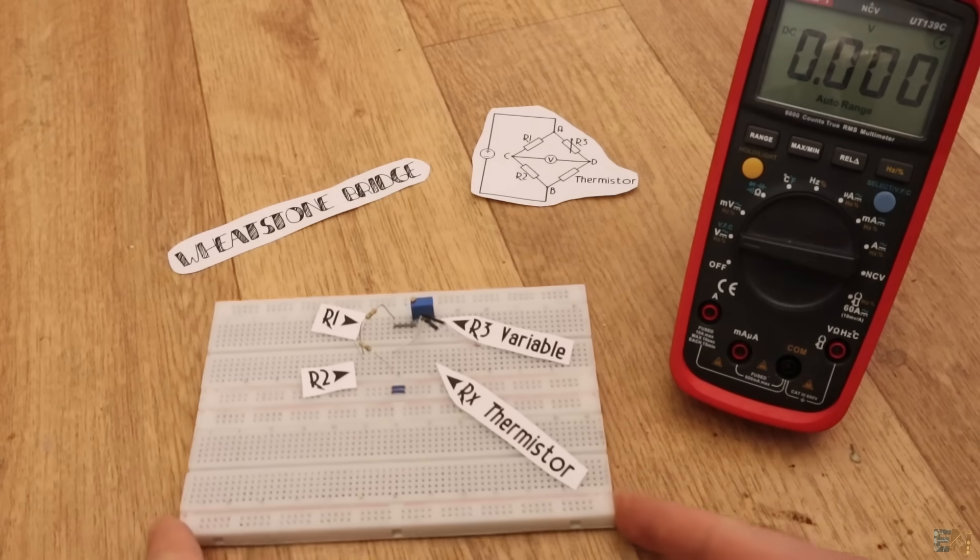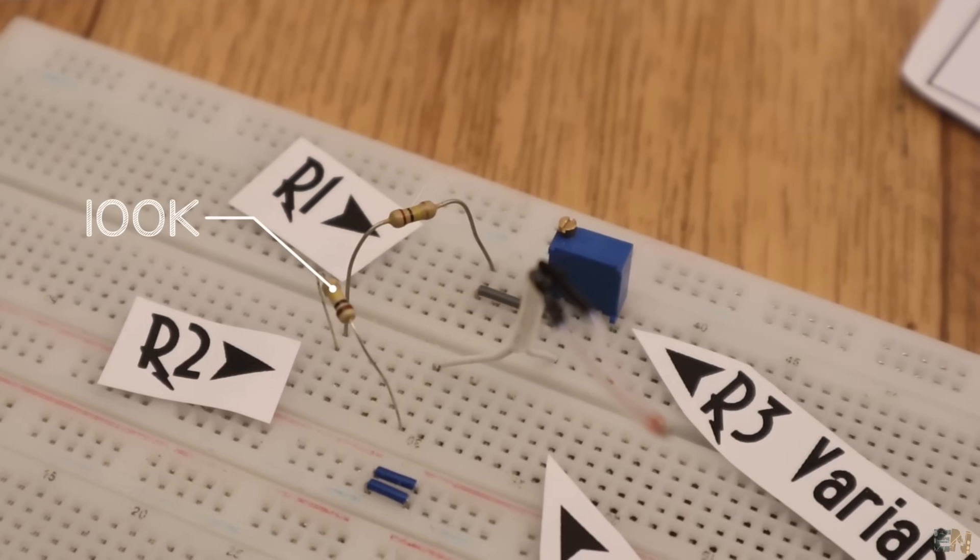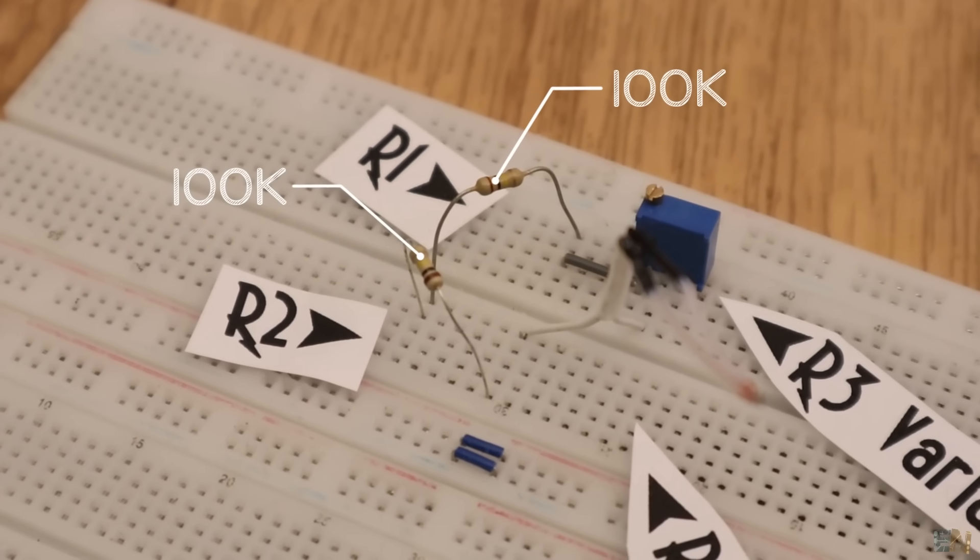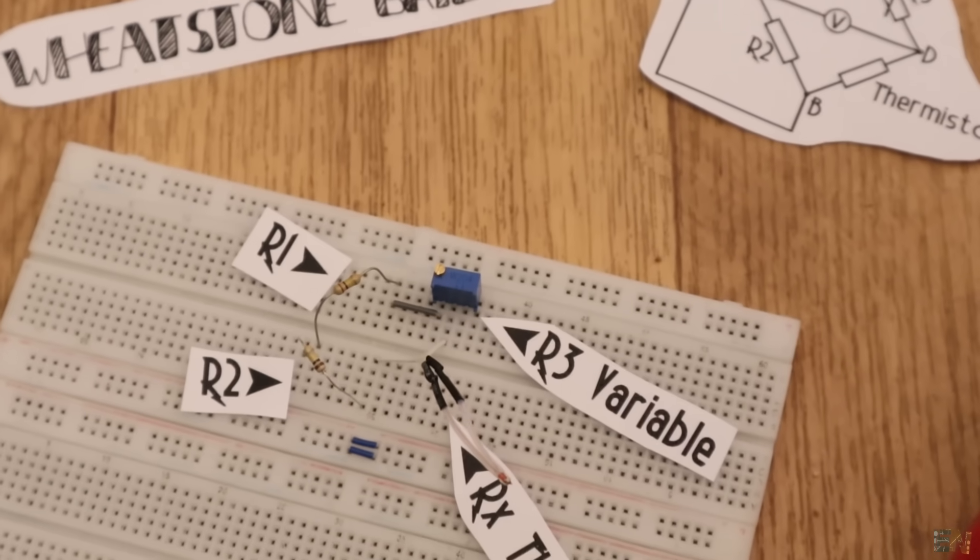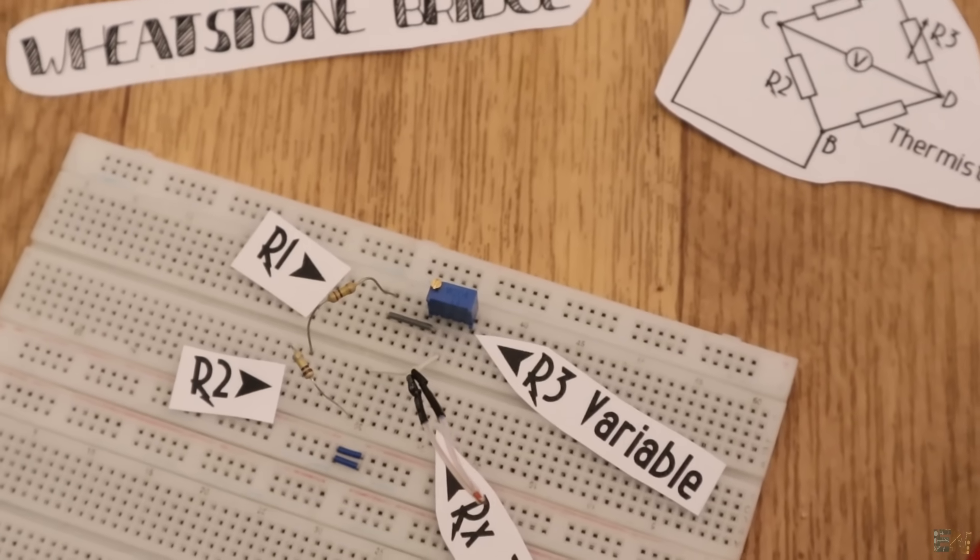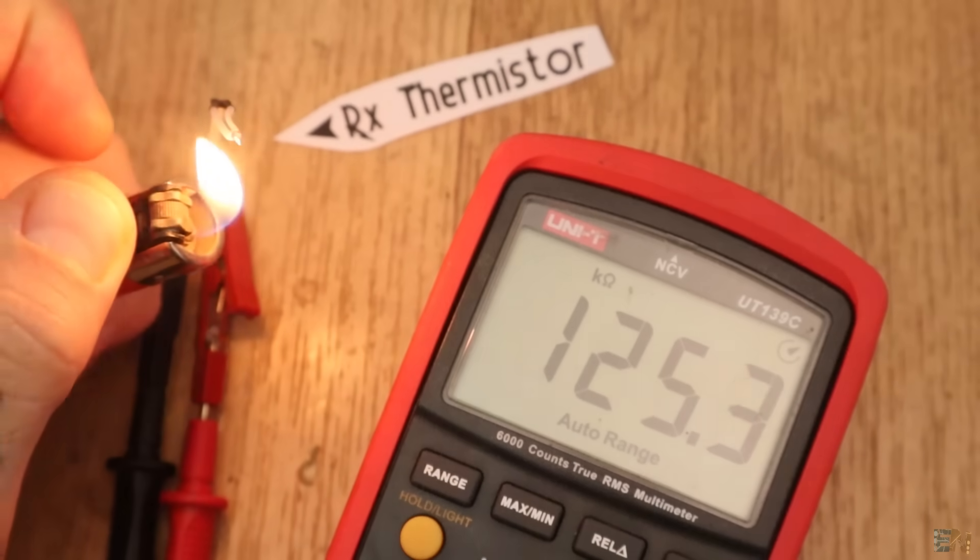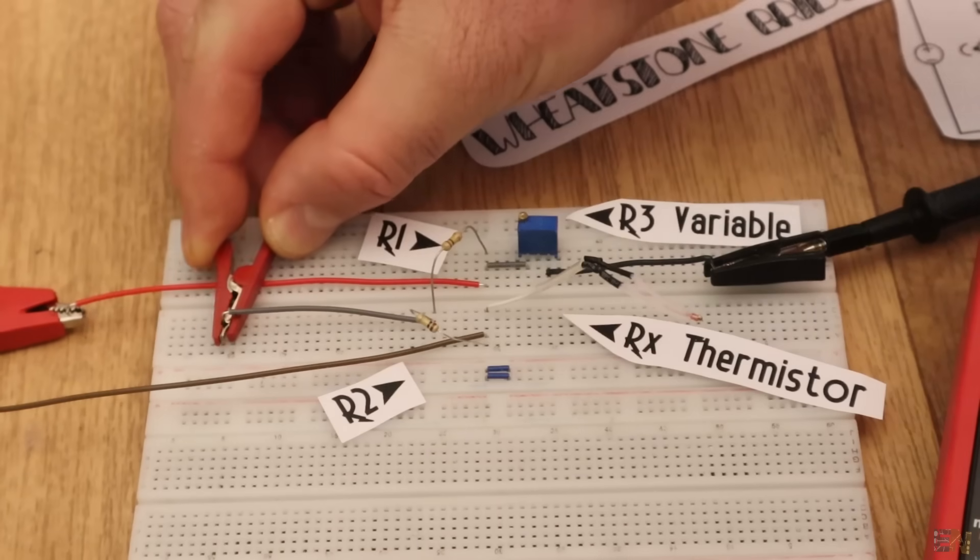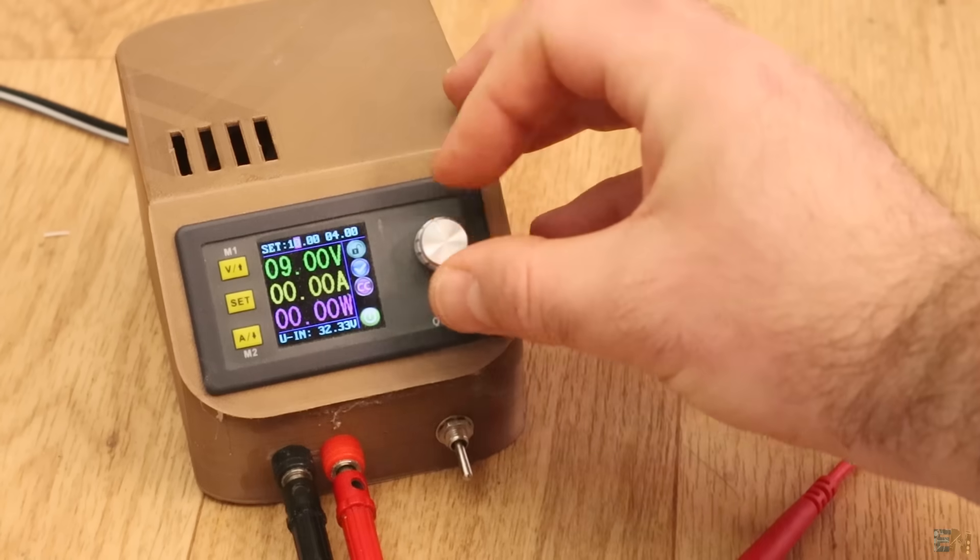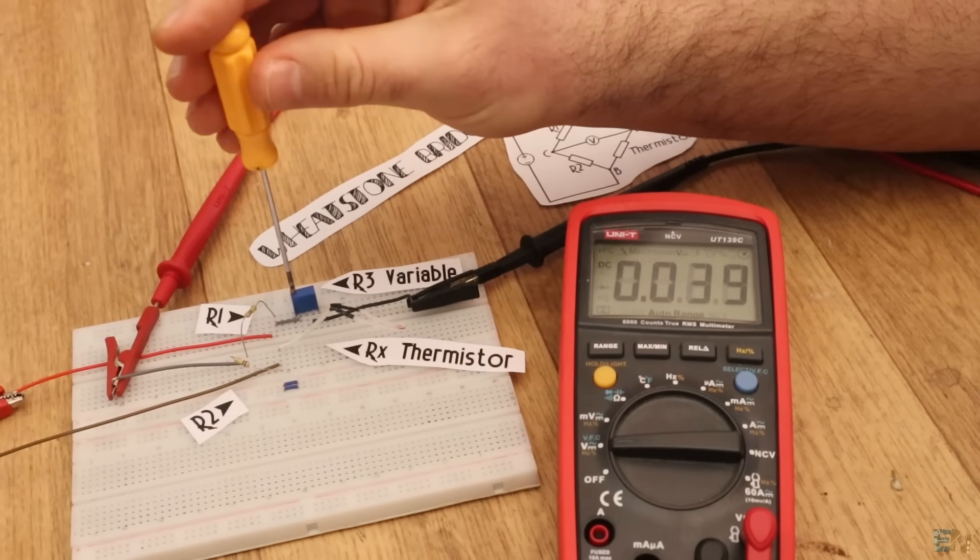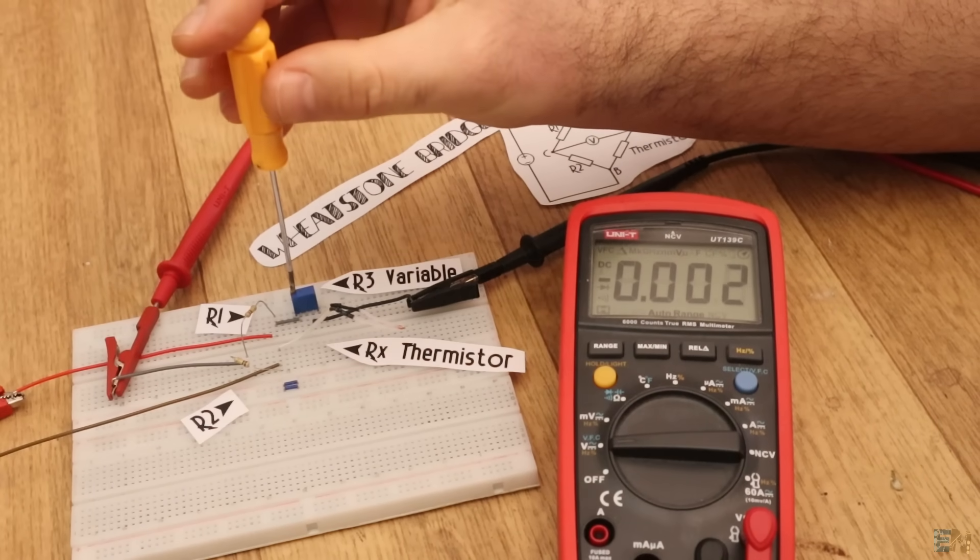Okay, so as a short example, I've connected a Wheatstone bridge on my breadboard and we have two resistors of 100 kOhms. Then we have a variable resistor of 200 kOhms and then we have a thermistor that could go up to 200 kOhms. Between points C and D, I connect my multimeter and I supply the circuit with 10 volts.